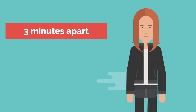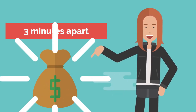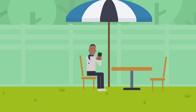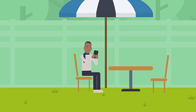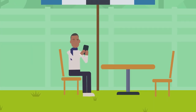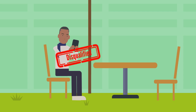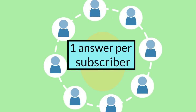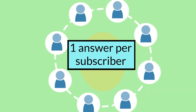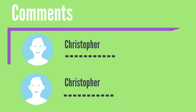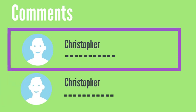The first correct answer gets the reward. If you fail to follow the time frame instructions, your answer will be disqualified, and only one answer per subscriber — your first answer is your official answer.